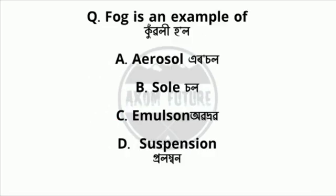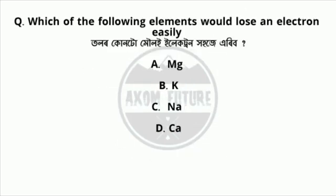Fog is an example of a colloid — specifically an aerosol. Question: which of the following elements would lose an electron easily?